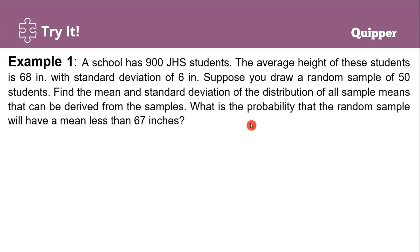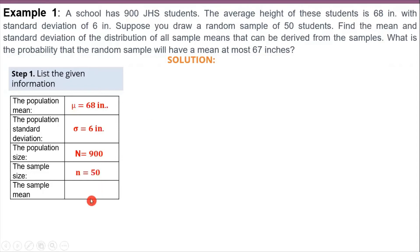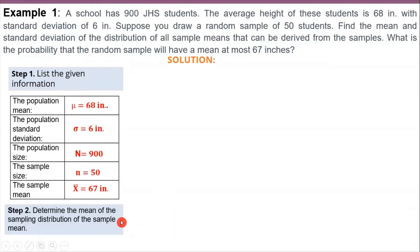It's important to classify numerical values with their corresponding description. Here's the solution. First, list down the given information: the population mean is 68 inches — the average height of all junior high school students. The population standard deviation is 6 inches, the population size is 900, the sample size is 50 students, and the sample mean is 67 inches. Step 2 is to determine the mean of the sampling distribution of the sample mean, which by the first property is equal to the population mean — hence, the mean is 68.